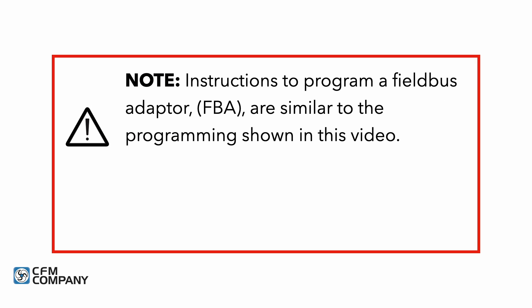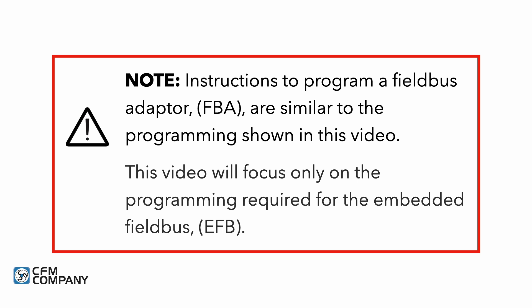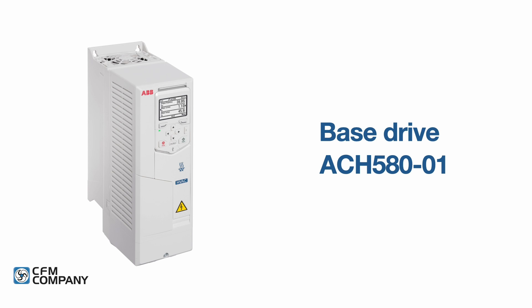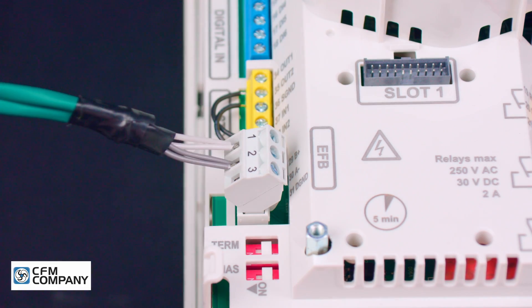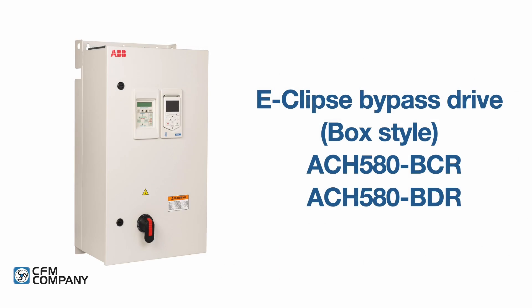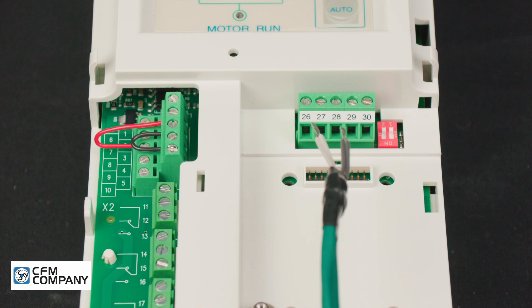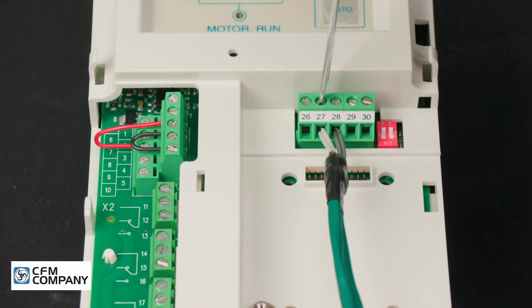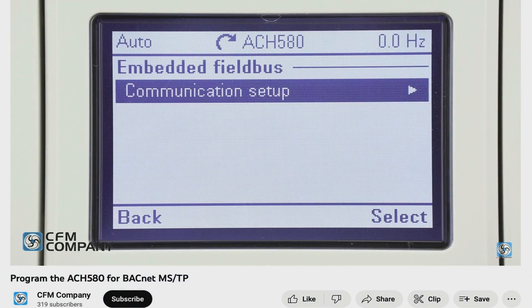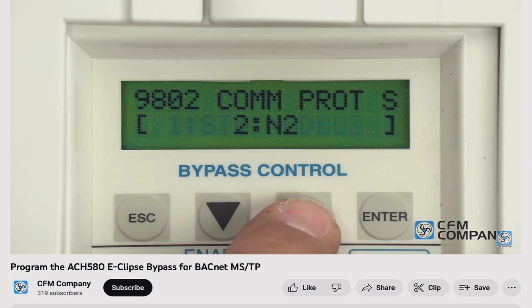Instructions to program a fieldbus adapter (FBA) are similar to the programming shown in this video. This video will focus only on the programming required for the embedded fieldbus. Depending on the model of ACH580 drive, the serial communications wires are landed at different locations. For drives without an Eclipse bypass, such as a base drive or a drive with a package disconnect, the wires for serial communications are landed on the EFB terminals of the drive. For drives that include an Eclipse bypass, such as a box-style enclosure or a vertical-style enclosure, the wires for serial communications are landed on the horizontal terminal strip of the bypass control unit (RBCU). For full details on how to program the drive for BACnet MSTP, see the links to our videos: Program BACnet MSTP in the ACH580 and Program BACnet in the Eclipse bypass.